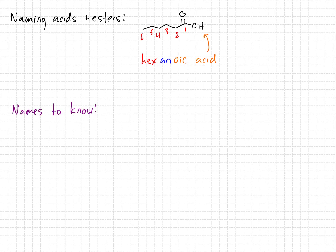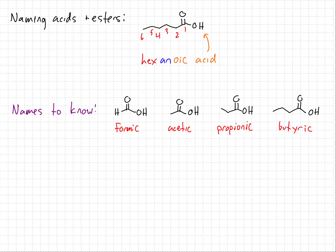There are some common names we need to know for small carboxylic acids, just like there were for aldehydes and ketones. Specifically: formic acid, acetic acid, propionic acid, and butyric acid. These acids are known almost exclusively by their common names. In fact, IUPAC guidelines do allow for the use of these names in IUPAC names of derivatives — for instance, '2-chloroacetic acid' would be a valid IUPAC name.